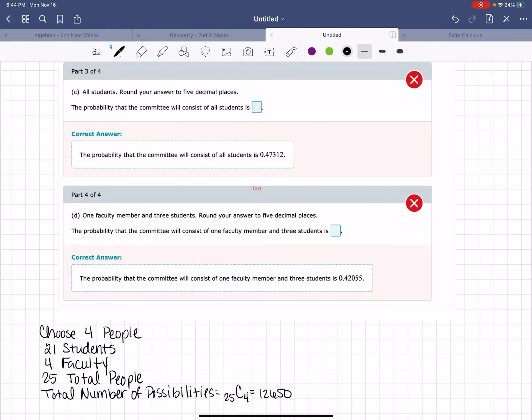Okay, so this is a continuation of the problem from section 10.5, and this is parts 3 and 4. We still are choosing 4 people from a total of 25, 21 students and 4 faculty, and the total number of possibilities for 25 choose 4 is 12,650.